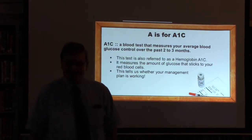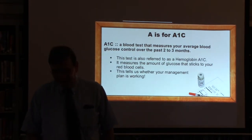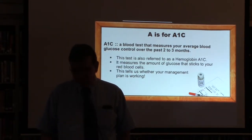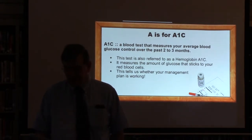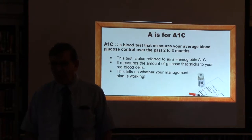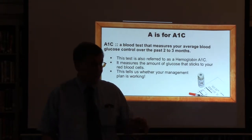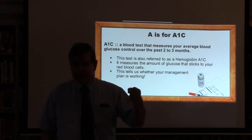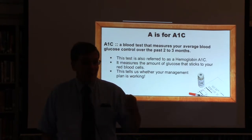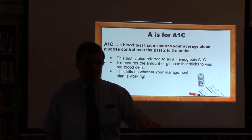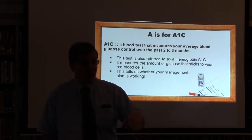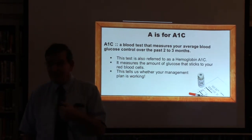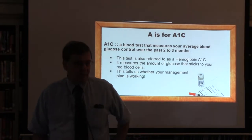A is for A1C. One of the most common terms associated with diabetes is A1C. This is a blood test that measures a person's average blood glucose level over the previous two to three months. The average lifespan of a red blood cell is about three months. When your sugar goes up, sugar attaches to the red blood cell and then it doesn't let go. So even if you get desirable fasting blood sugars in the morning, if your postprandial blood sugars are going too high, that sugar is going to attach to the red blood cells and that's going to show up on the A1C. There's no cheating this test.